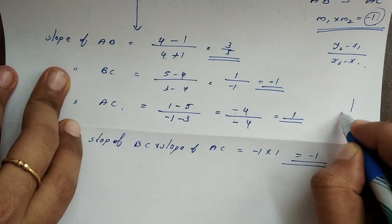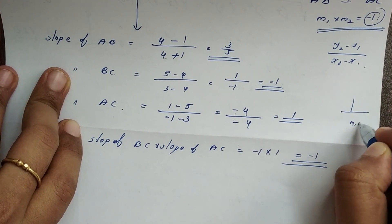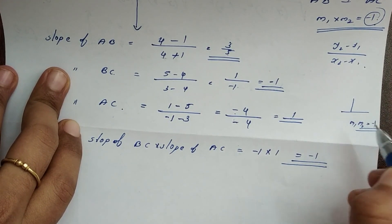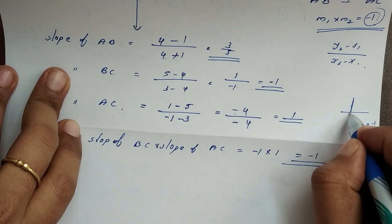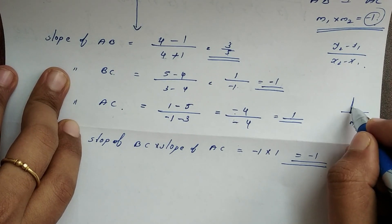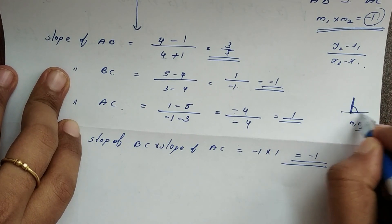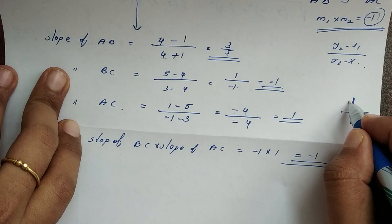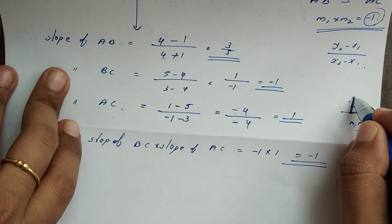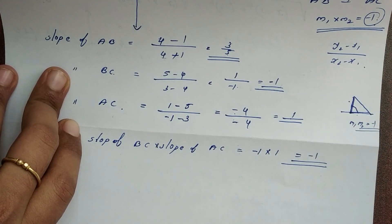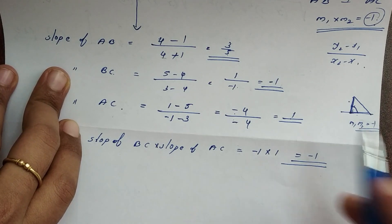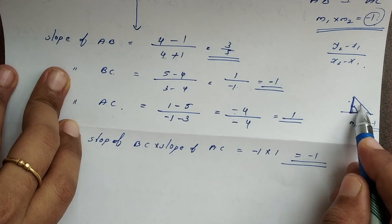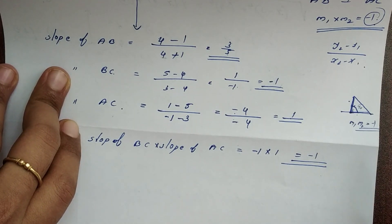Since M1 times M2 equals minus 1, the two sides BC and AC are perpendicular to each other. This confirms there is a 90-degree angle at vertex C. Therefore this triangle is a right-angle triangle.